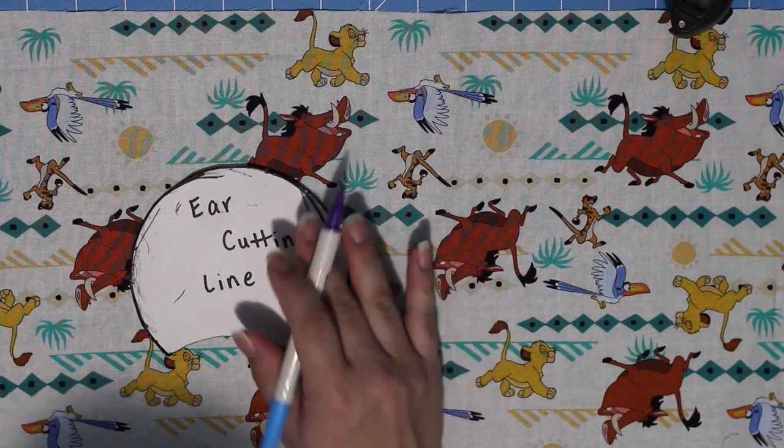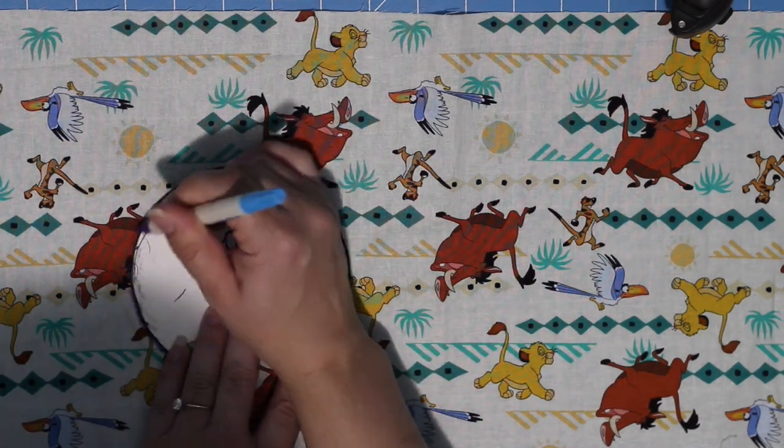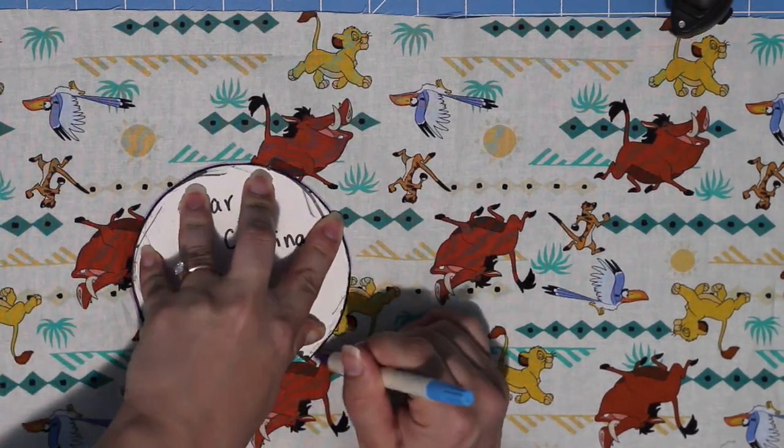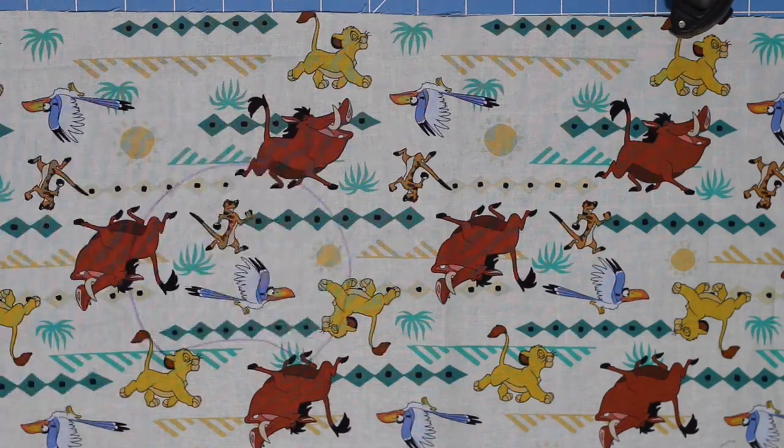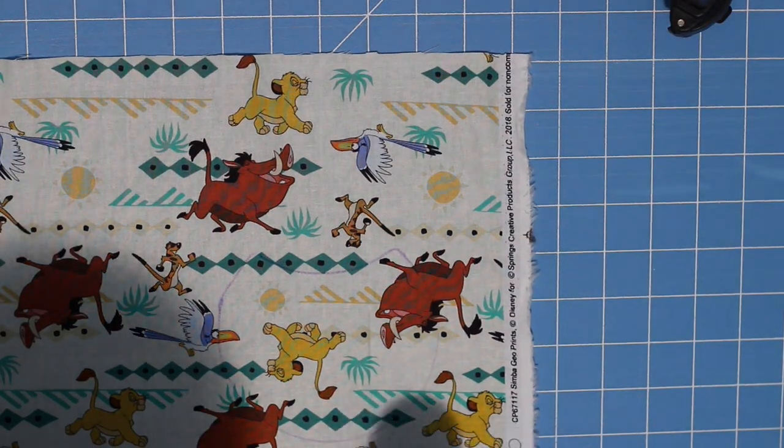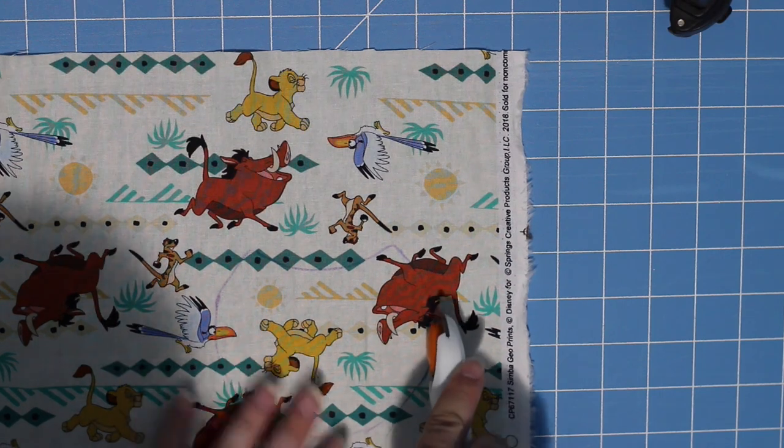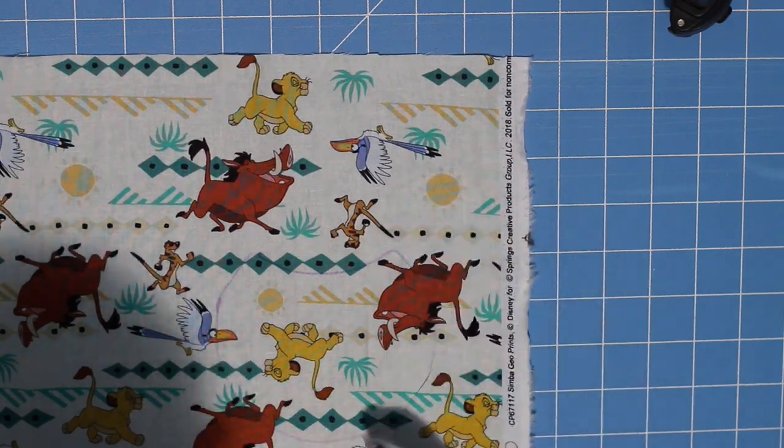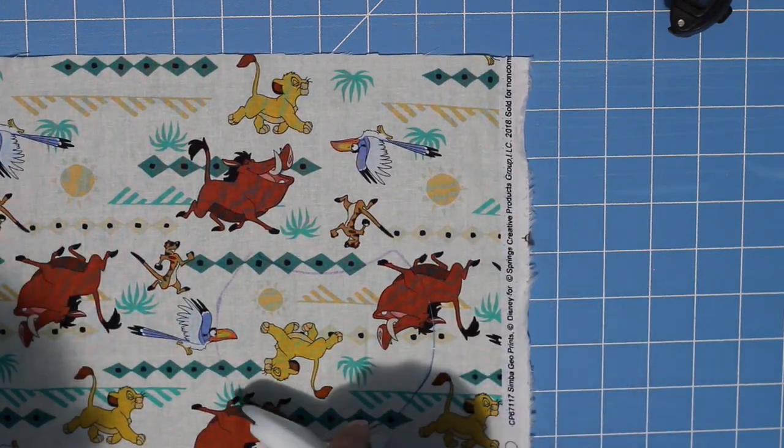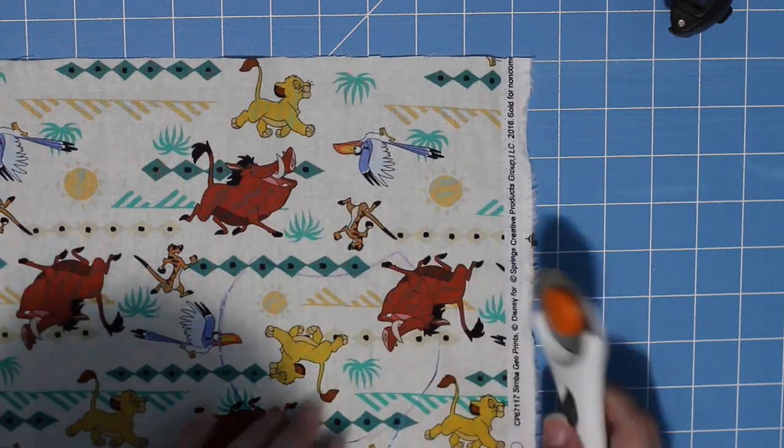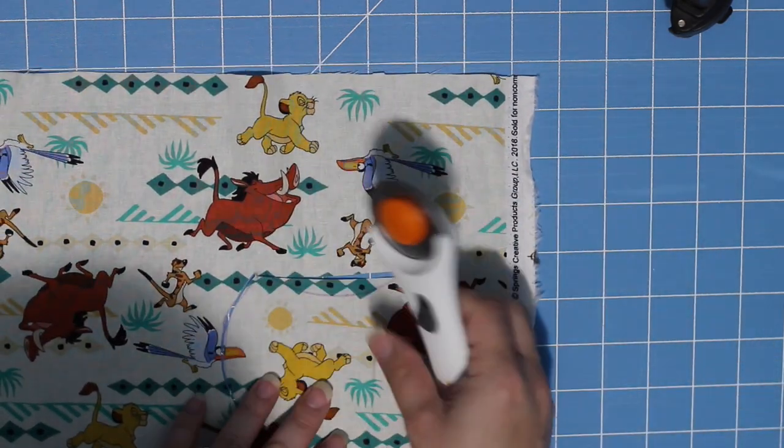So to start off, I took my Lion King fabric and I took my ear cutting line template. All of these templates can be found in the description box below. I traced over Zazu and Timon and then I also picked a spot with Simba on it, and then I went ahead and cut them out. I do prefer using a rotary blade for this.